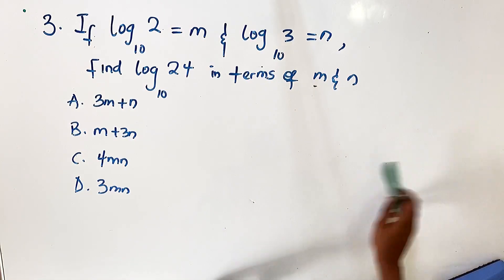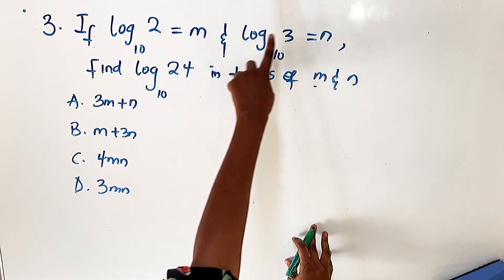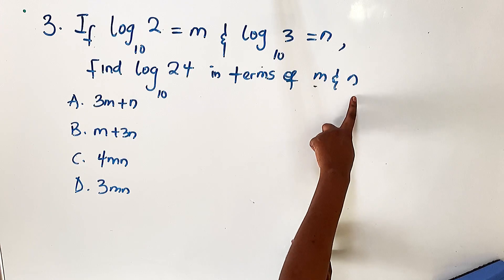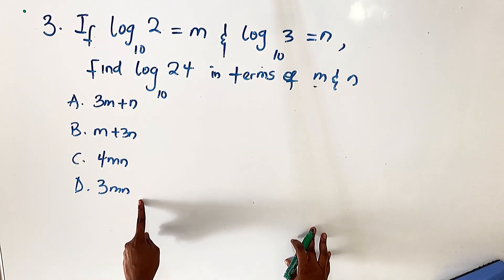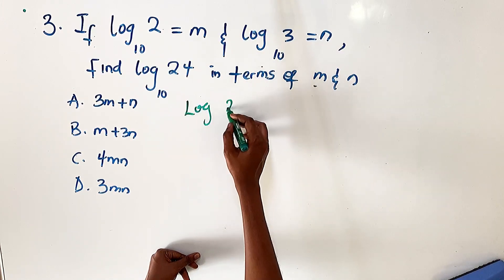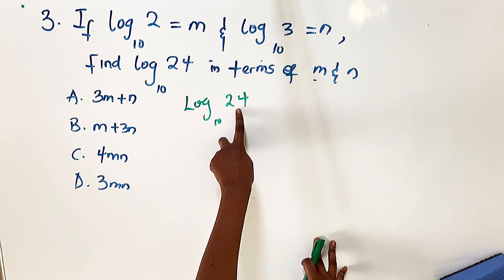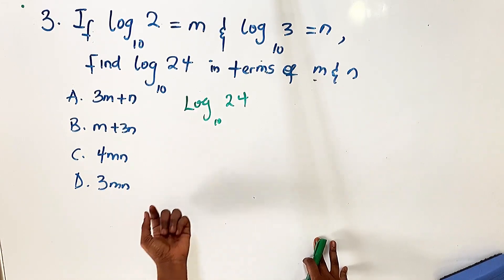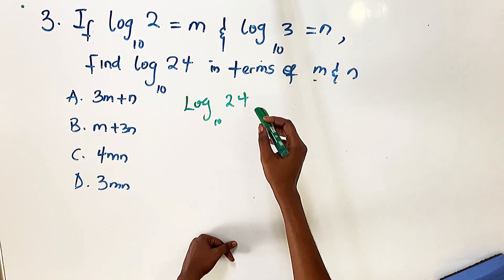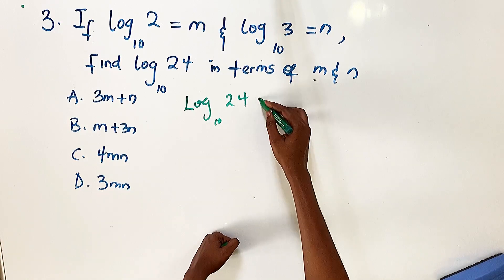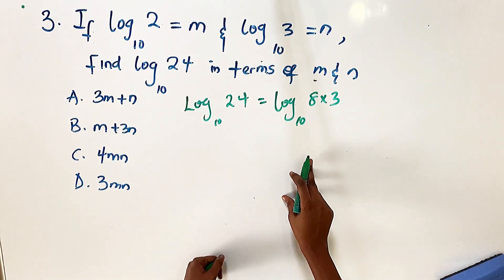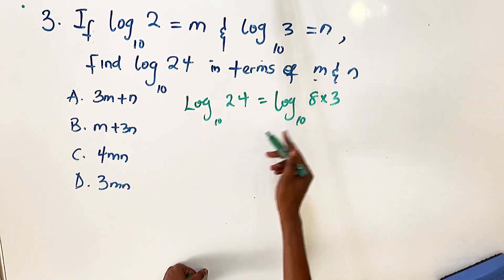Question number three: given that log 2 base 10 is m and log 3 base 10 is n, find the value of log 24 base 10 in terms of m and n. Let's simplify log 24 base 10. 24 can be written as 8 × 3, so this is the same as log(8 × 3) base 10.